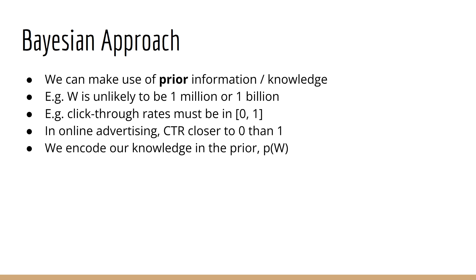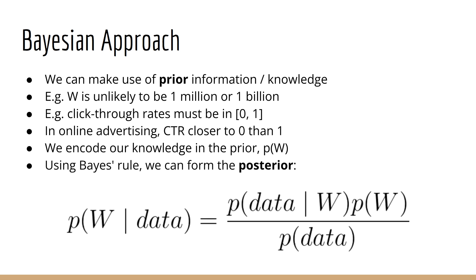We can encode our prior knowledge about W in a distribution called the prior. We can then combine the prior and the likelihood, and by using Bayes' rule, we can compute the posterior distribution over W. This distribution, p of W given data, accounts for both the data we observed in our training set and our prior beliefs about W.